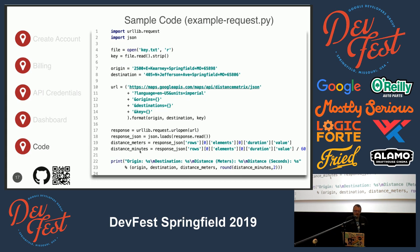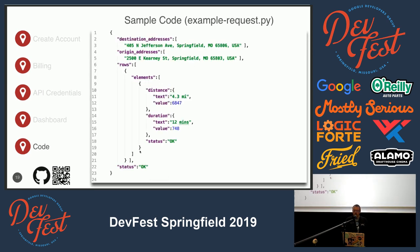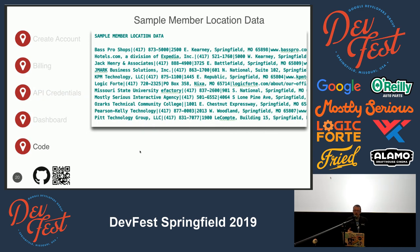We finally output the origin, destination, distance in meters, and the travel time in minutes — rounded off. If we were to run this sample, the output would show from our event sponsor O'Reilly's office over to the Factory would be 748 meters of driving and 12 minutes. Here's the raw output that comes back from Google — you can see how they provide these element pairs, in this case showing 4.3 miles and 748 seconds, which is 12 minutes.